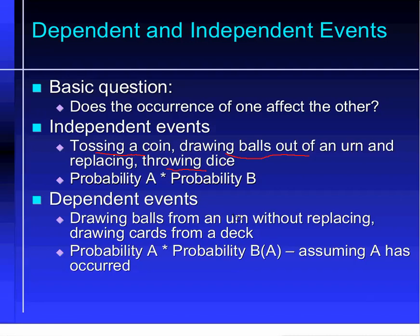Drawing cards from a deck is similar. If you're trying to draw three queens and you've already drawn two queens, you still have a chance of getting a third queen, but of course there are only two queens left in the deck. If you've drawn one queen and one king, you won't be able to draw three queens. The odds change as the events happen.